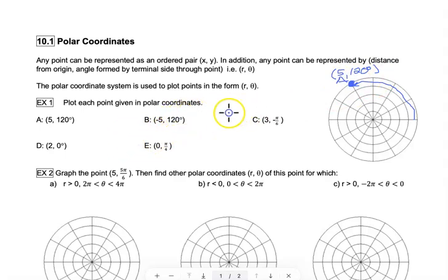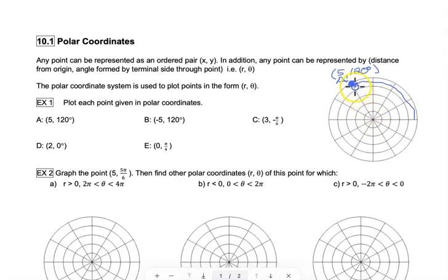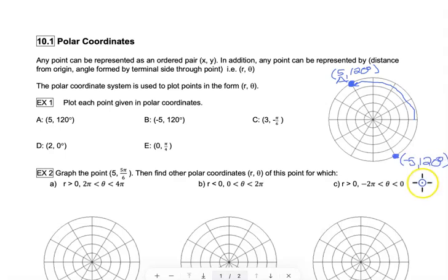Point B is negative 5, 120 degrees. I wanted to do these back-to-back because when you have a negative radius, all that means is that you're going to go the opposite direction. If I've gone 120 degrees, that lands me here normally. The radius that makes a straight angle with it is the one that will have the negatives — negatives go out the other way. So negative 5, 120 degrees would be right here; negative values just make the point go the opposite direction, basically 180 degrees opposite.